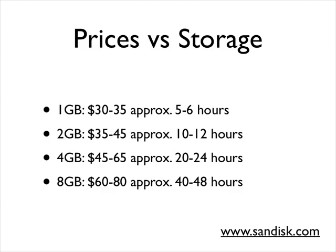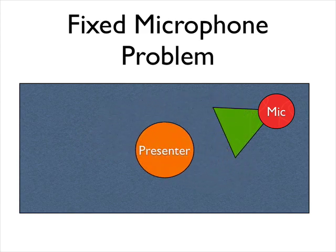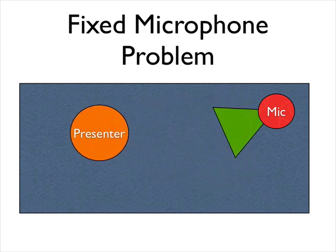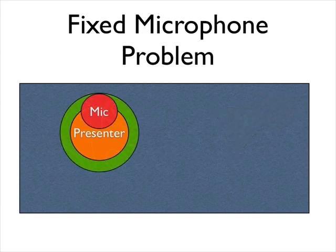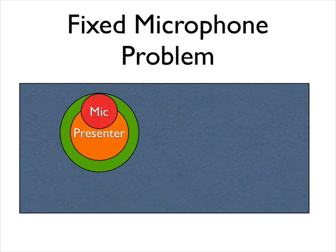Because this device clips to your shirt, you walk around the room without the fixed microphone problem. With a fixed microphone, your voice gets louder and quieter as you move to and away from it. If you're wearing the microphone, it goes around the room with you and your recording sounds stellar.